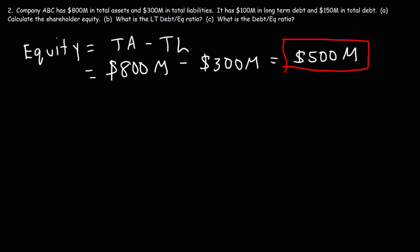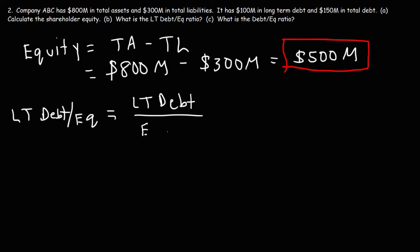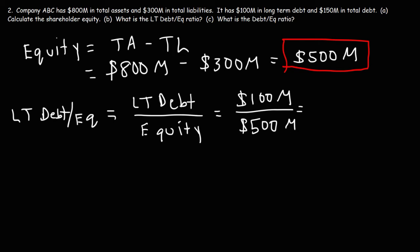Now let's move on to Part B: what is the long-term debt-to-equity ratio? The formula is the same as before — long-term debt divided by shareholder equity. This company has $100 million in long-term debt and $500 million in equity. So it's $100 million divided by $500 million, which is 0.20.